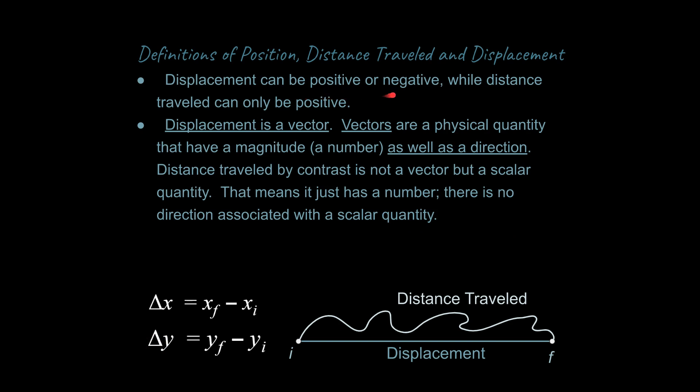Displacement can be positive or negative; distance traveled can only be positive. Displacement is a vector — vectors are physical quantities that have both a magnitude and a direction. Distance traveled is not a vector but a scalar quantity, meaning it just has a number with no direction. Other examples of scalar quantities would be mass or temperature — there's no meaningful direction associated with those.